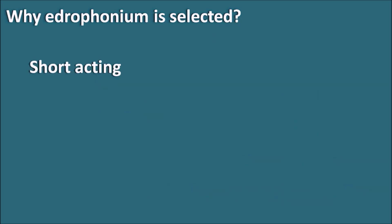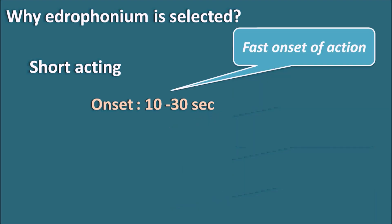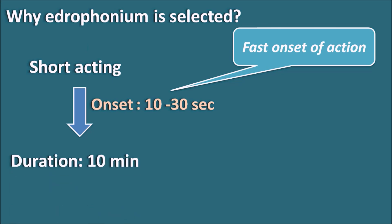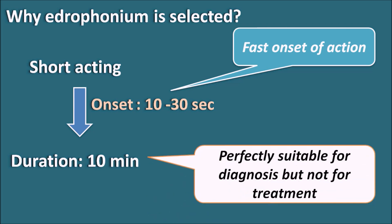The second advantage is that Edrophonium is short-acting. When the injection is given, it shows an onset of action of 10 to 30 seconds, and it works for a duration of only 10 minutes. Because of this short duration of action, Edrophonium is perfectly suitable for diagnosis but is not suitable for treatment. Within 10 minutes it improves muscle strength, indicating a possible diagnosis of myasthenia gravis, making it an ideal drug for diagnostic purposes.